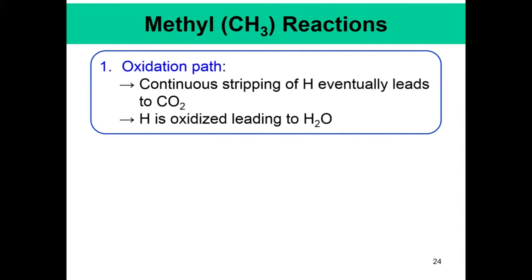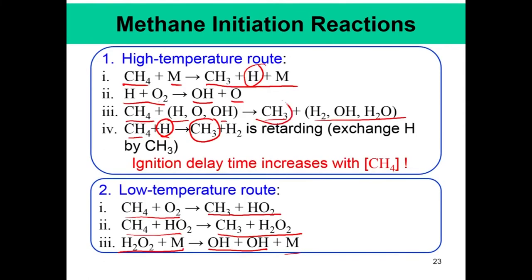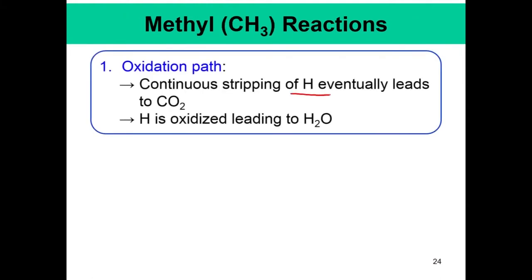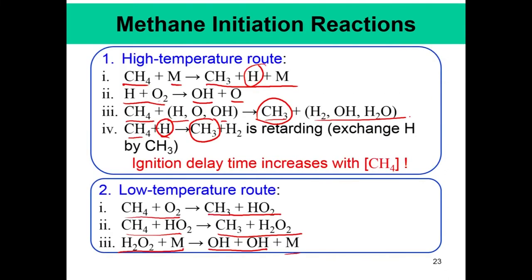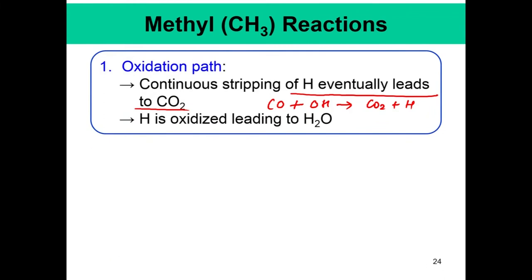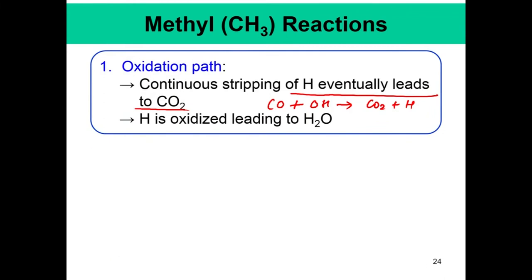What happens next is continuous stripping of hydrogen. From CH4, CH3 is formed; from CH3, CH2 is formed, and there is continuous stripping of hydrogen. Eventually, CO is formed, and then CO plus OH reacts to form CO2 plus H. These steps continue to strip CH4 to CH3, and CH3 eventually to CO and then to CO2. The H atom formed will also oxidize, leading to HO2.